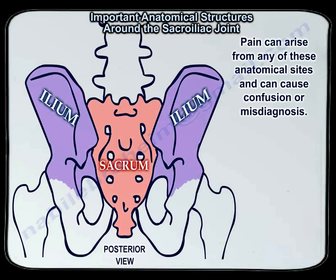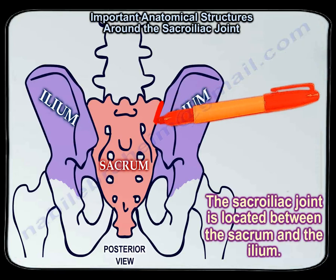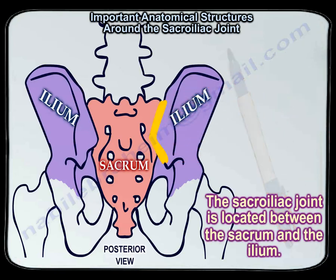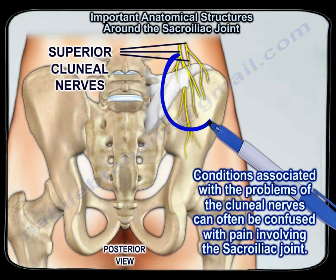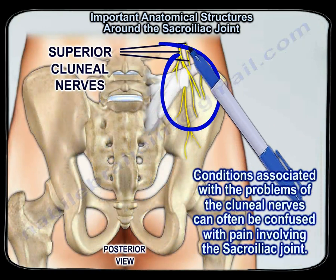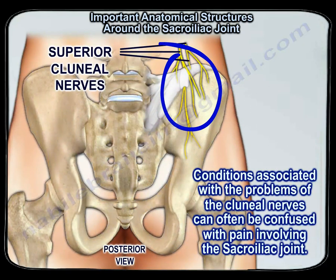The sacroiliac joint is located between the sacrum and the ilium. From this posterior view of the pelvis, you can see the superior colonial nerves are close to the sacroiliac joint. Conditions associated with problems of the colonial nerves can often be confused with pain involving the sacroiliac joint.